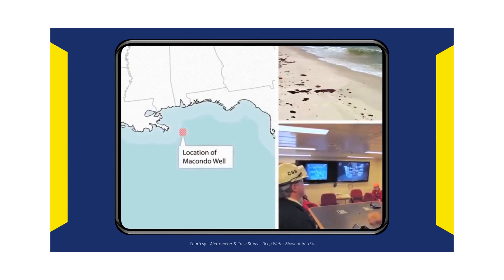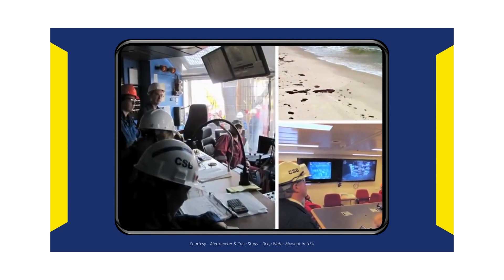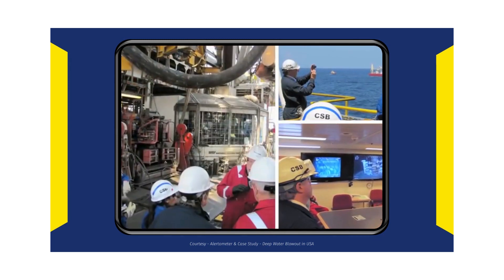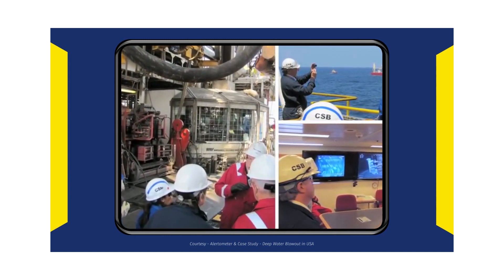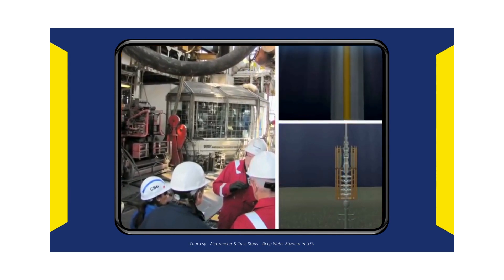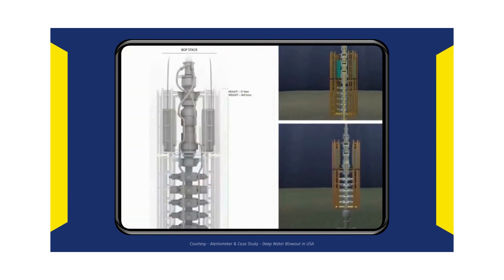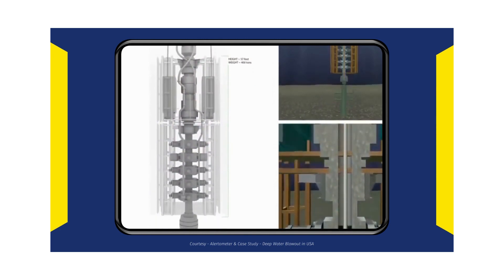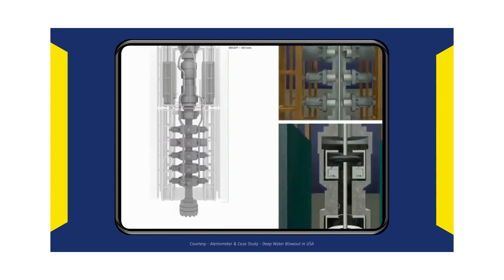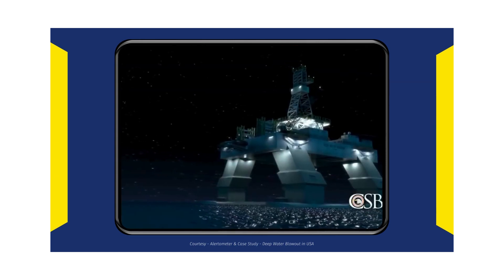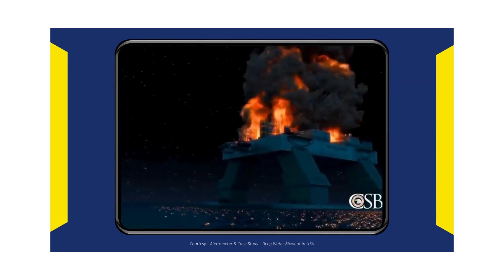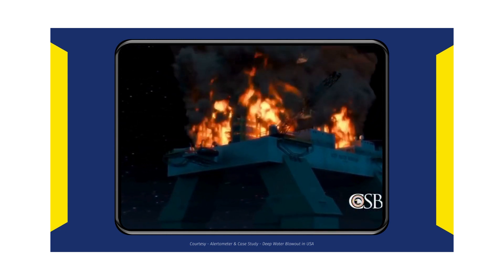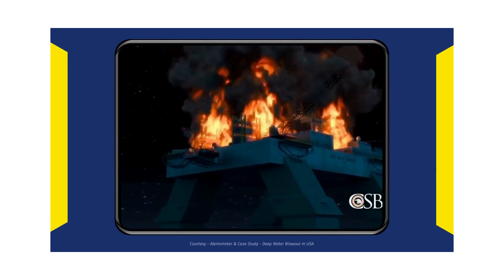In 2010, the CSB launched an investigation to examine the technical, organizational, and regulatory factors that contributed to the accident. During the investigation, the CSB made new findings about why a key piece of safety equipment — the Deepwater Horizon's blowout preventer — failed to seal the well during the emergency. These new findings help explain why the accident was so devastating, and the CSB cautioned that other blowout preventers currently in use could fail in similar ways.